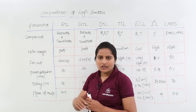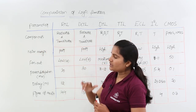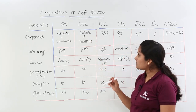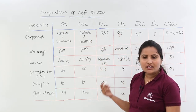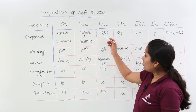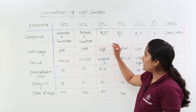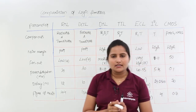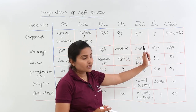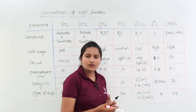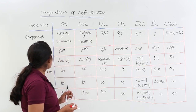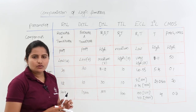The first parameter is components. In RTL we use resistors and transistors; in DCTL also resistors and transistors; in DTL we use resistors, diodes, and transistors. In TTL we use only resistors and transistors; in ECL also only resistors and transistors; in I²L we use only transistors; and in CMOS we use PMOS and NMOS transistors.